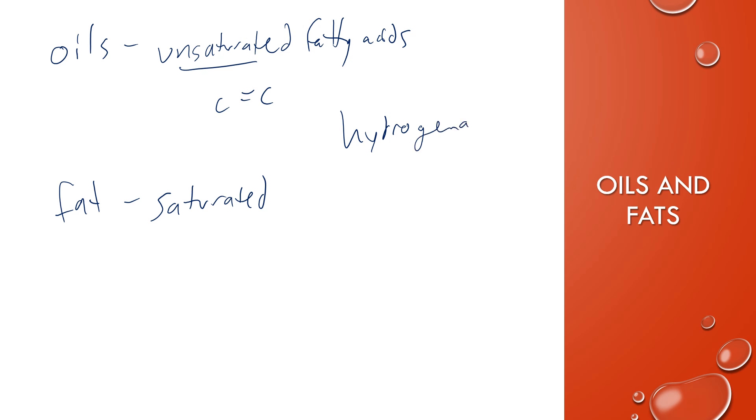What you can actually do is take an oil and turn it into a fat through hydrogenation. So you might have seen on some food labels, like partially hydrogenated. And so that's where they're taking some of the fatty acids with the double bonds and adding hydrogens to turn them into saturated fatty acids, which can help solidify it a little bit better.